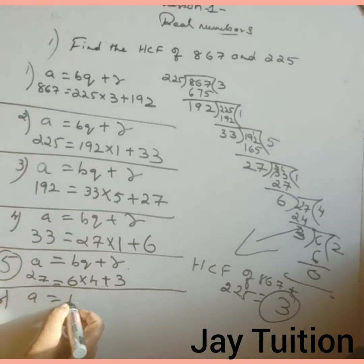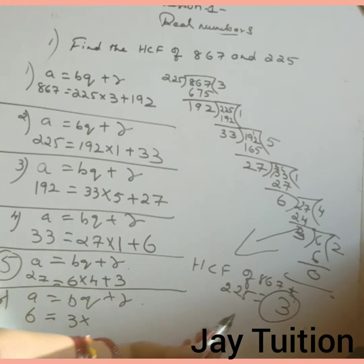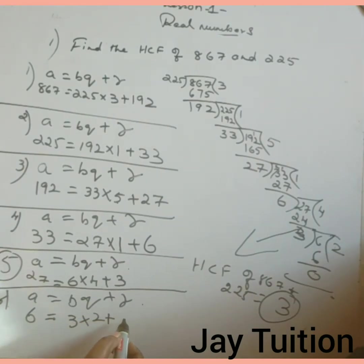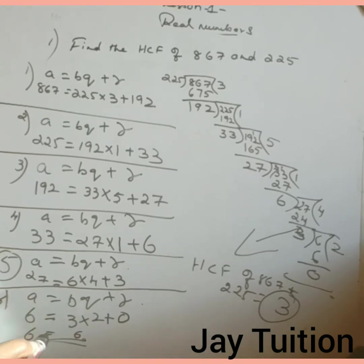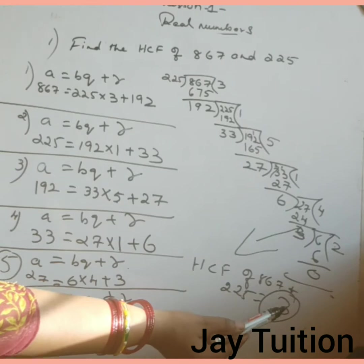Last step we will do: A equals to BQ plus R. A is 6, B is 3 into quotient 2 plus remainder 0. So you will get 3 times 2 is 6. The answer is correct and the HCF is 3.